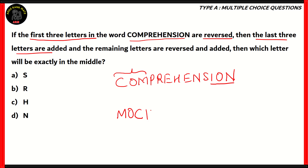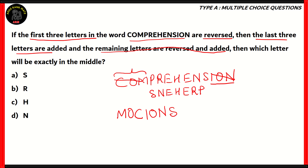Without any change we are putting it directly into the new phrase. Then the question says the remaining letters are reversed and then added. So first let's reverse the remaining letters. We will get S, N, E, H, E, R, P and then we will add it directly into this phrase. We will get S, N, E, H, E, R, P.